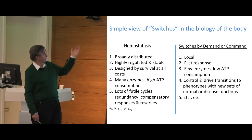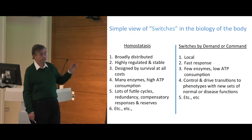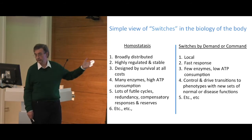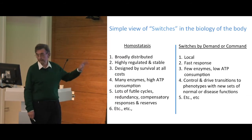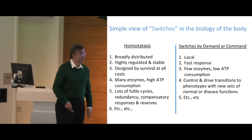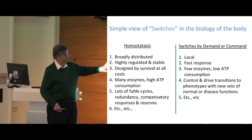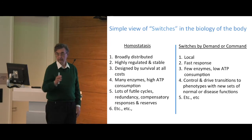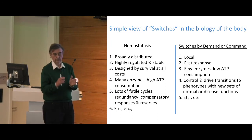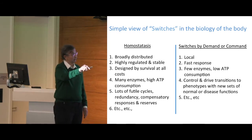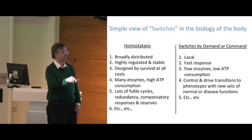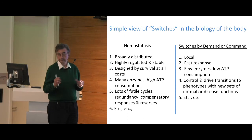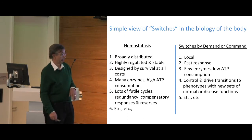I want to separate the body's biology into simple categories. Homeostasis: it's broadly distributed, highly regulated, and very stable. It was designed for survival at all costs — many enzymes, high ATP consumption, lots of futile cycles, lots of redundancy, lots of compensatory responses and reserves. Then over here, there are switches that will switch from homeostasis into a demand or command to make a change. These tend to be local, fast responses, few enzymes, low ATP consumption, and they control and drive transitions of phenotypes to new sets of instructions, whether normal or diseased.